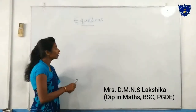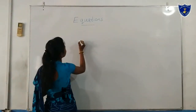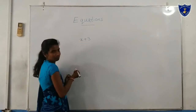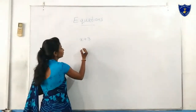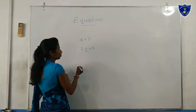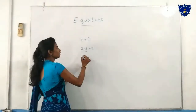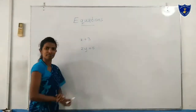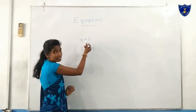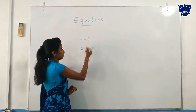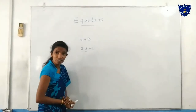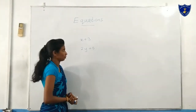Now, look at the point. x plus 3. 2y plus 5. Then, what is this? x plus 3 is an algebraic expression. 2y plus 5 is an algebraic expression.